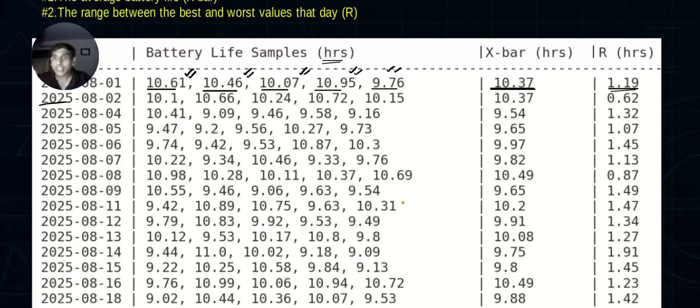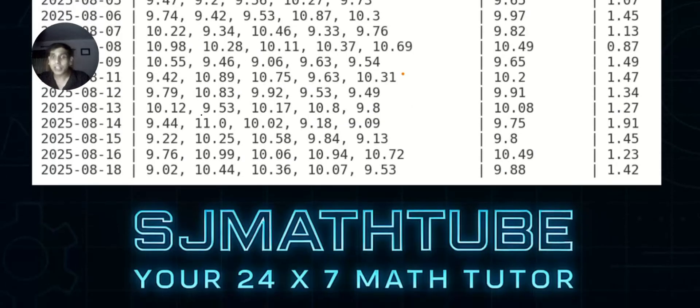Second thing: you find the range. What do you mean by range? The biggest value minus the smallest value. Day two, August 2nd, again they selected five batteries randomly: 10.1, 10.66 hours, 10.24, etc. The average is again 10.37 and this time the range is a little bit less. Third is a holiday. Again on the fourth, there was production. The QA team selects the batteries. Same story continues.